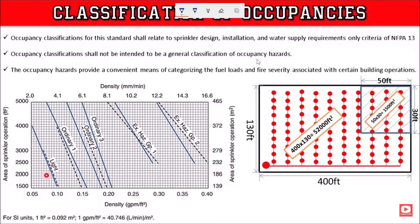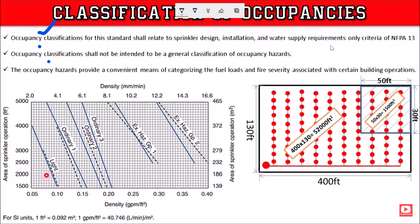Classification of occupancy for this standard — there is an occupancy class for each standard. This occupancy classification shall relate to the sprinkler design and the water supply requirement. The criteria of NFPA 13 — the rules and regulations for design, installation, and water supply requirement for the sprinkler system — occupancy classification shall not be intended as a general classification of occupancy hazard.